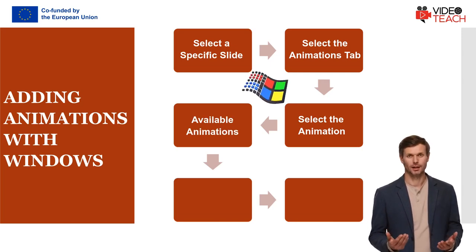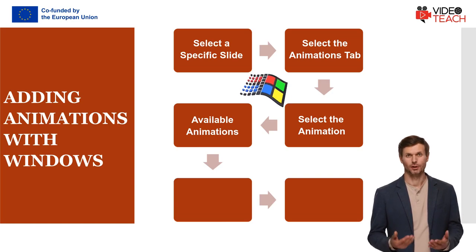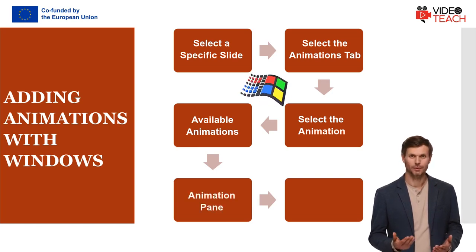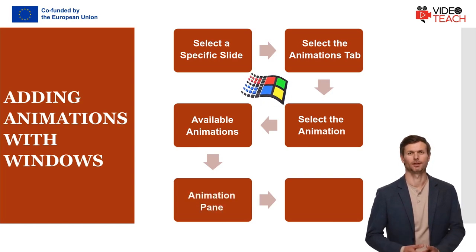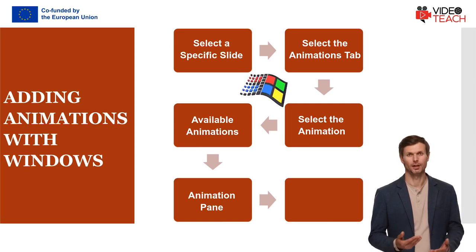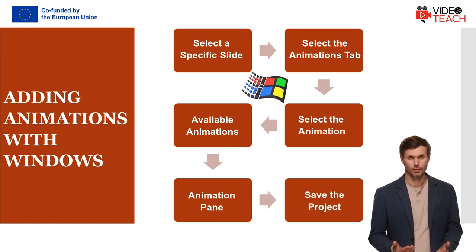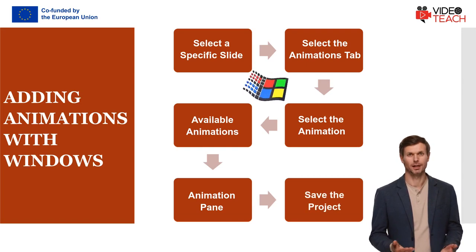You can also expand the menu by tapping the drop-down button to see more animations. Browse through the list and select the animation that you want to apply to the object — keep in mind that the animation you've selected will only be applied to a single object. Once you've applied the animation, tap the Animation Pane button. This will display a list of all the animations you've applied to your slides. Click the arrow next to the animation and tap Effect Options to open a dialog box where you can customize the animation style.